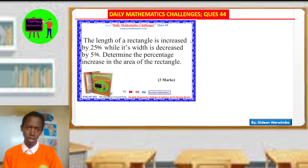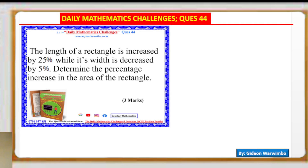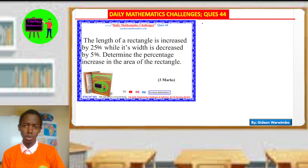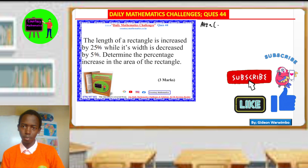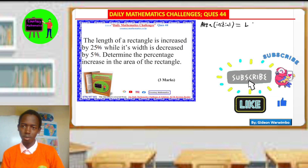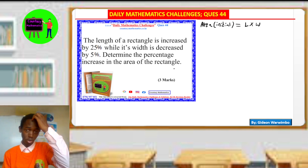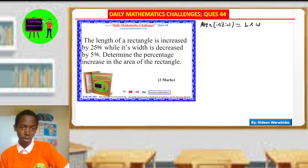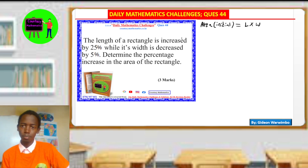We have the length of the rectangle being increased and the width being decreased, and we are supposed to find the percentage increase in the area. The question is asking about the area, so we start with what we already know: area is found by doing length multiplied by width. I usually love using diagrams, so let's use one here.